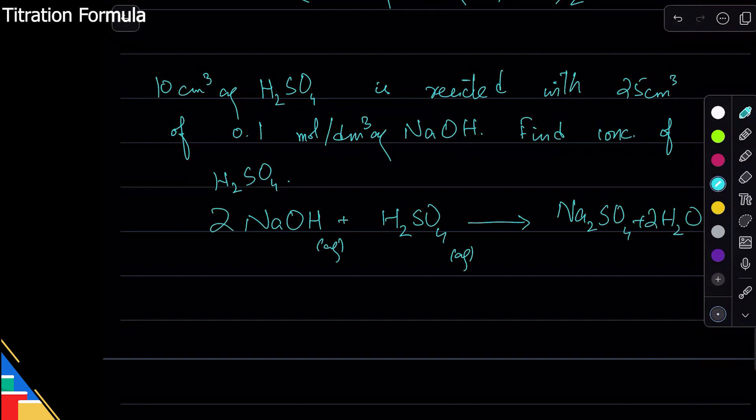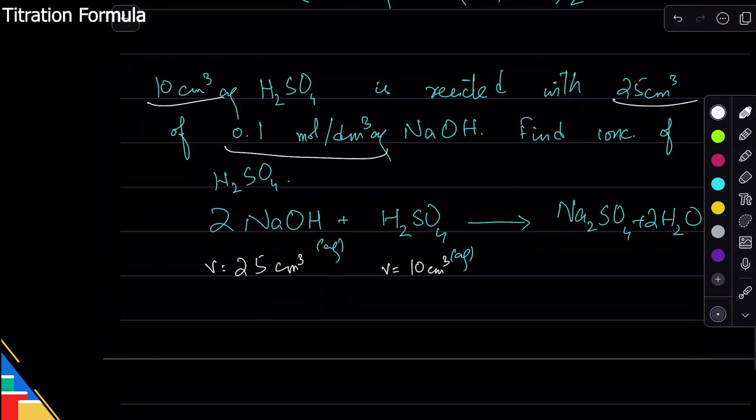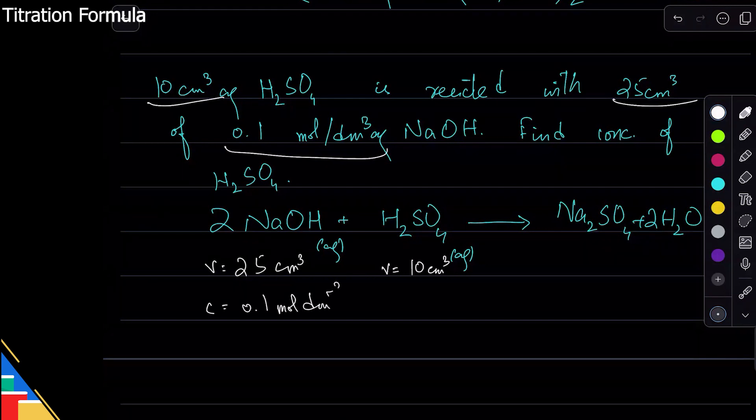Let's first take the data out. We know the volume of this is 10 cm³. Notice how I'm writing the data - I'm separating everything. This volume is 25 cm³. This is concentration 0.1 mole per dm³. You can write mole dm⁻³ or mole per dm³, they're the same. And this is unknown.